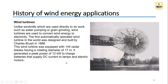From windmill to wind turbine - a great deal of research has gone on. The first fully automatically operated wind turbine was designed by Charles in 1888. This wind turbine was equipped with 144 rotors, having a rotation diameter of 17 meters. It generated a peak power of 12 kilowatts to charge batteries that supplied DC current to lamps and electric motors. This was the first development of a wind turbine, coming into existence in 1888.